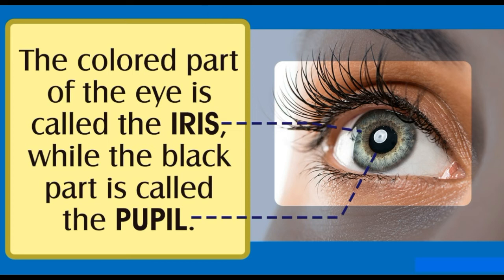Muscles of the eye — the eyeball is held in its place by the help of several eye muscles. The eye muscles are responsible for the up and down as well as the left and right movement of the eye.